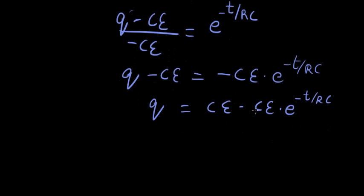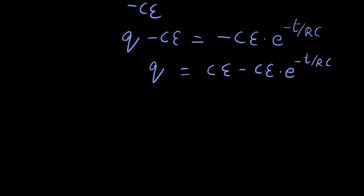So you get q equals ce minus ce e power minus t over rc. And if you can factor out ce from there.